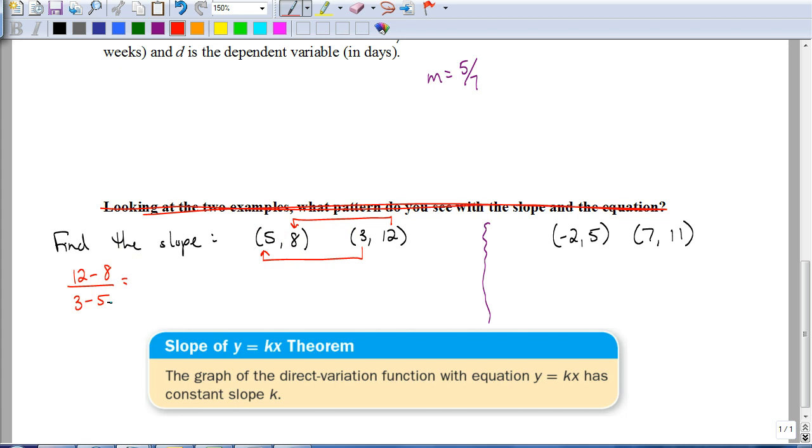The order for this is slightly important. Meaning, if I pick the 12 first and take 12 minus 8, I need to make sure that I start with the 3, then, from that same coordinate, and start with the 3 first and take 3 minus 5. What you don't want to do is you don't want to take 12 minus 8 and then take 5 minus 3. You'll end up with the wrong answer. Well, in a second, we'll look at, what if we switched around and said 8 minus 12 first? Would it give us the same answer? We'll see. But first, 12 minus 8 is 4, and 3 minus 5 is a negative 2.